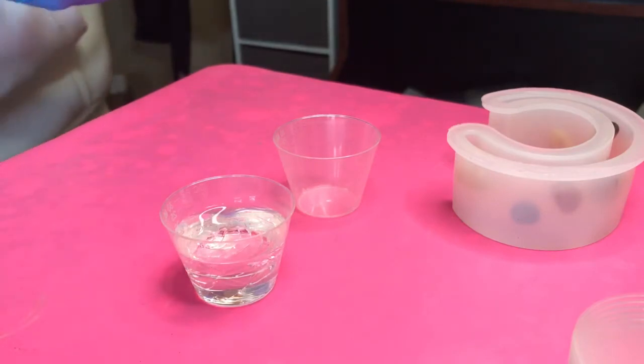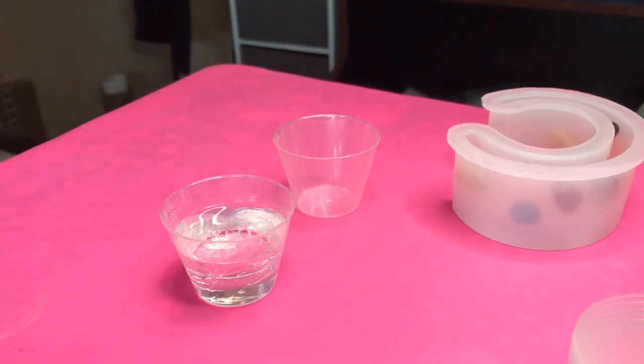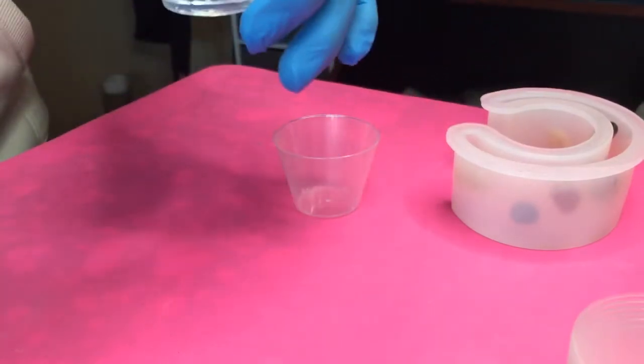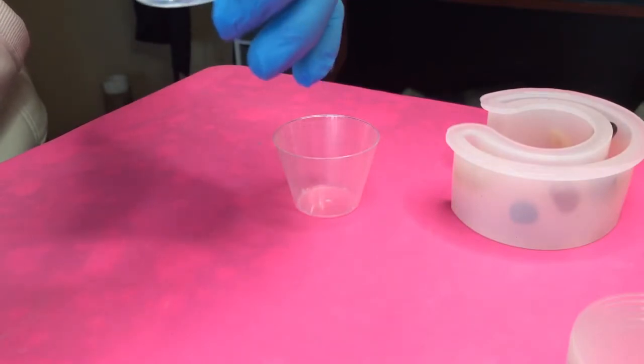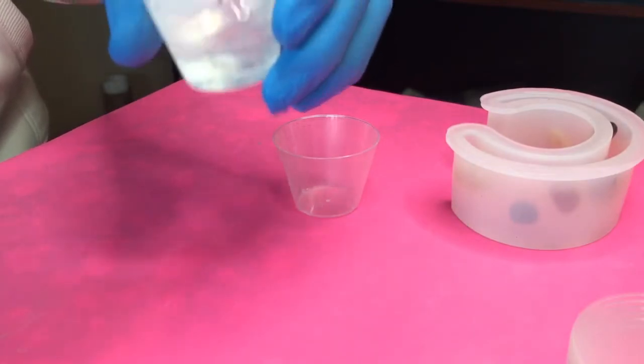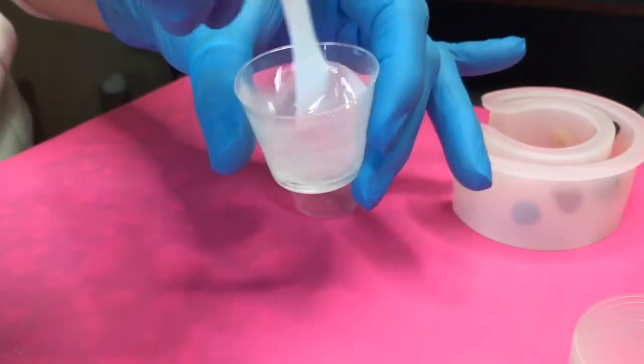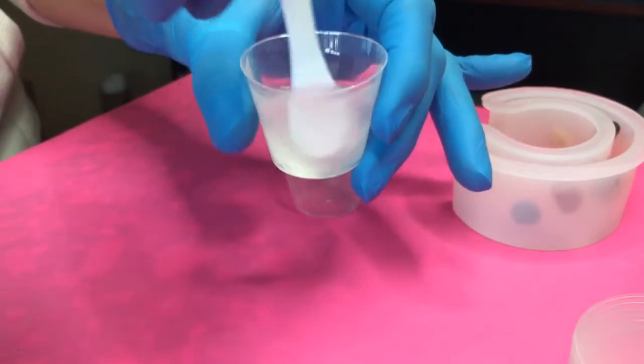Baby wipes come in handy because they wipe the epoxy off really well when it's still wet. Q-tips and rubbing alcohol—I like to dip the q-tips in the rubbing alcohol and that gets the epoxy off if you have overflow or anything else. A bunch of paper towels, wet paper towels.